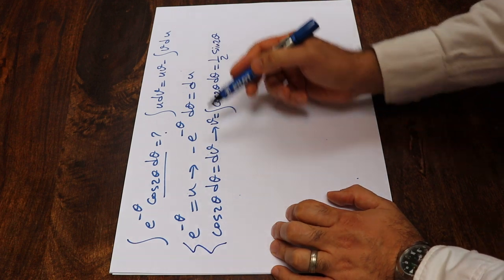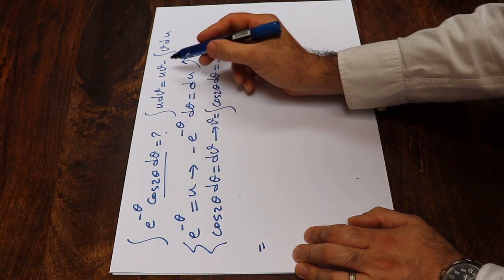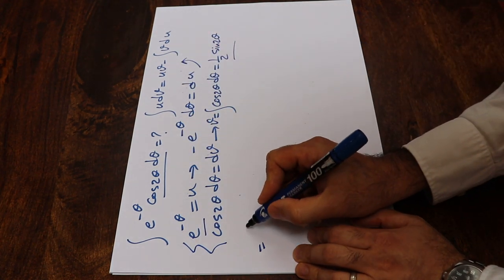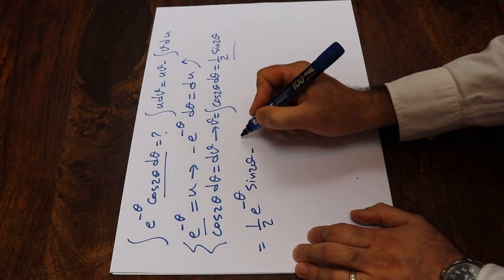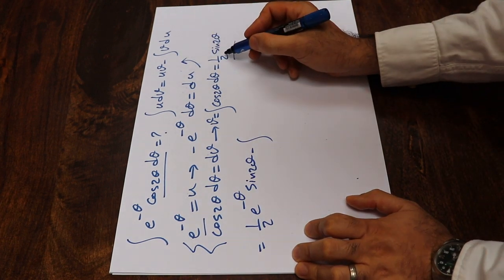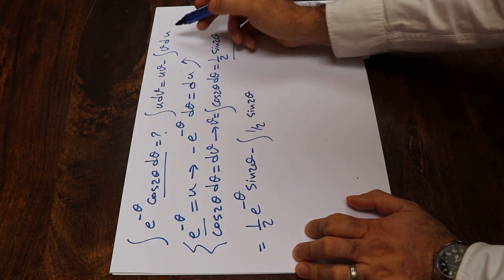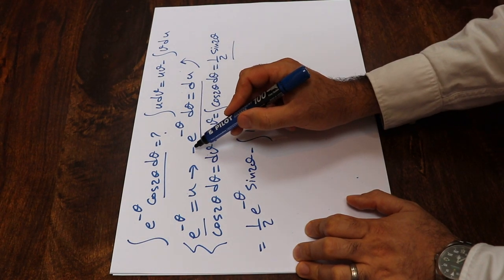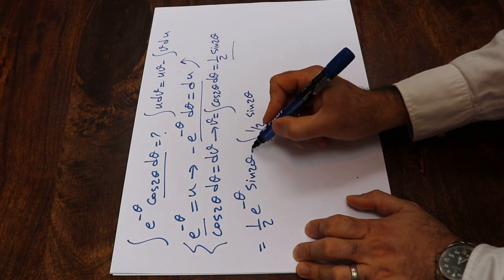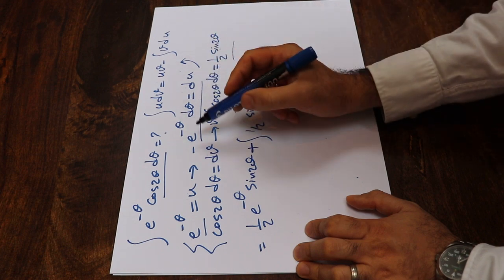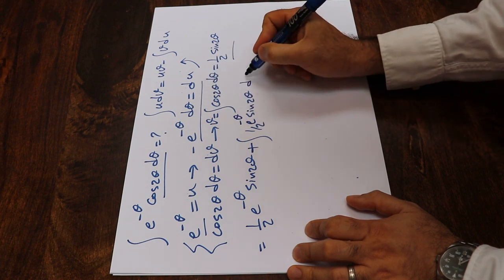Now substituting into the formula, this integral equals uv, which is 1 divided by 2 times e to the power of minus theta times sine 2 theta, minus the integral of v du. Here v is 1 divided by 2 sine 2 theta, and du is minus e to the power of minus theta d theta. So minus times minus is plus, giving us plus 1 divided by 2 integral of sine 2 theta times e to the power of minus theta d theta.